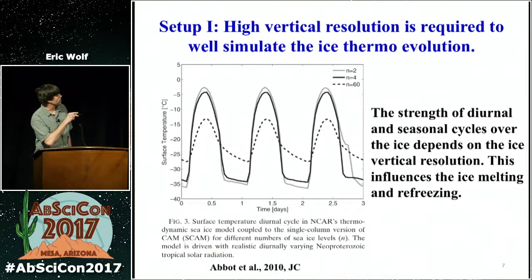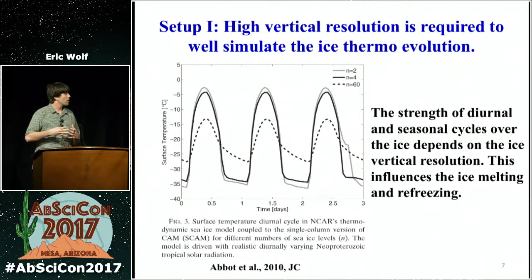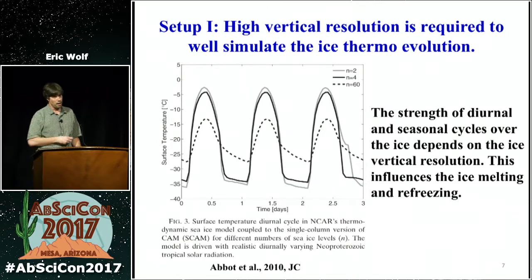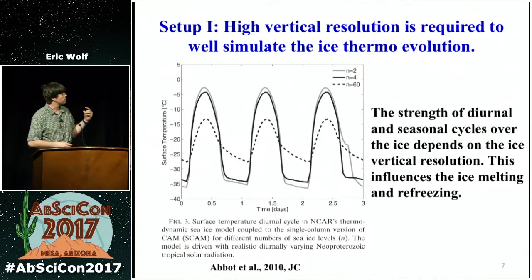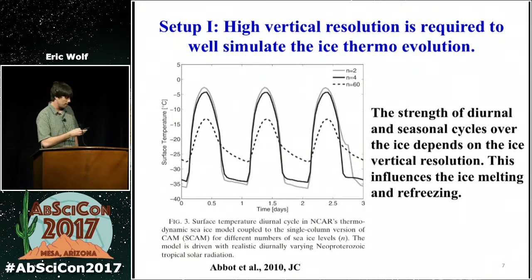Dorian used 60 vertical levels on the ice and finds the dashed line where the diurnal cycles and also seasonal cycles are much lessened. June used 10 vertical levels in his study, and I assume he did some sensitivity tests and found that 10 was good enough compared to 60.